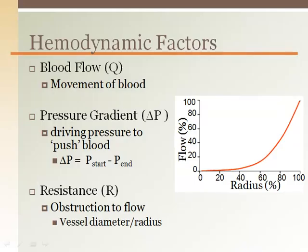Blood flow through vessels is defined by the same factors that affect blood flow through pipes, which is based on Poiseuille's law, a derivative of Ohm's law. The main components to consider are the pressure gradient and the resistance, which determine blood flow.